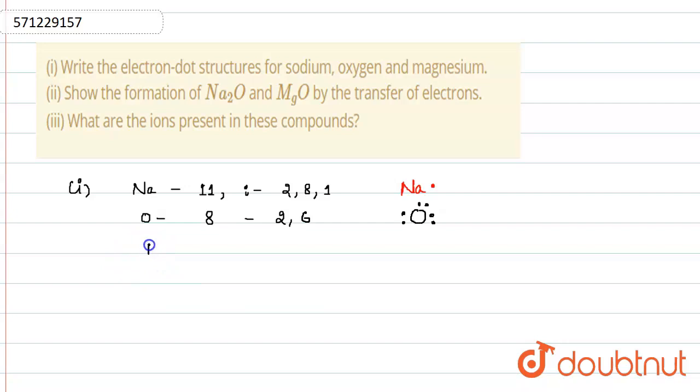Next we are given magnesium. Its atomic number is 12 and its electronic configuration is 2,8,2. Its electron dot structure will be magnesium with two electrons only.